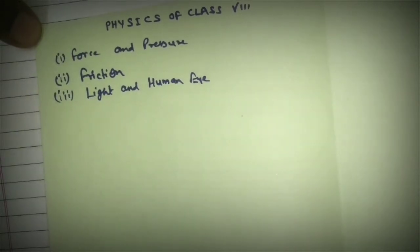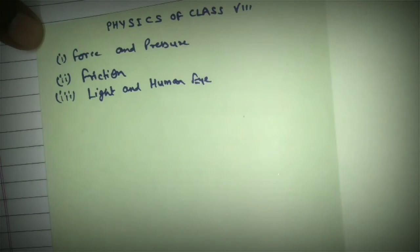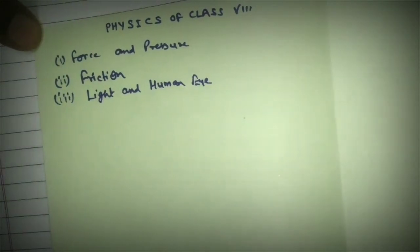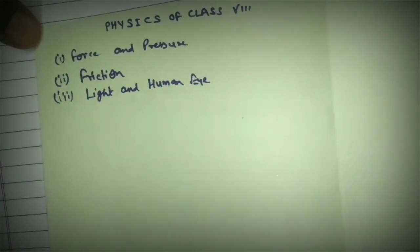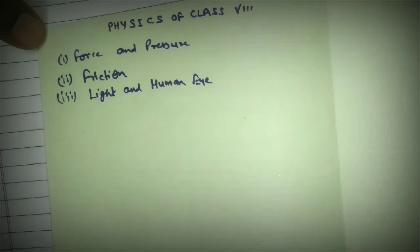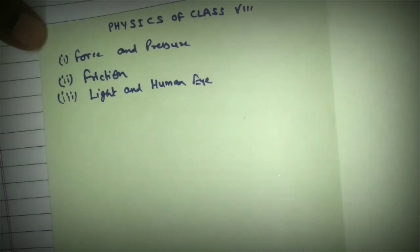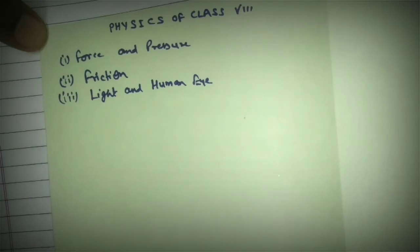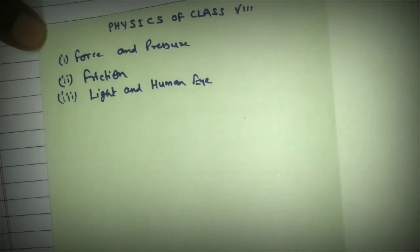In the second part of this chapter we discuss about the human eye. In this topic we discuss the structure and function of the human eye, and then we study the different diseases of the human eye and the methods of correction of those diseases.